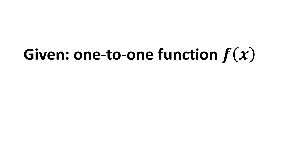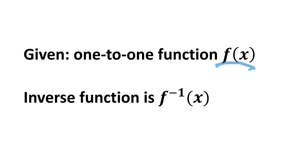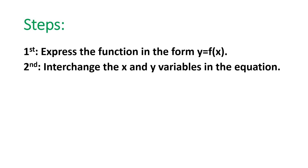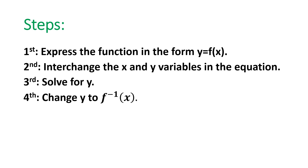In symbols, given a one-to-one function f(x), the inverse f is denoted by this symbol, which is read as the inverse of f(x). To find the inverse of a one-to-one function, consider the following steps. First, express the function in the form y equals f(x). Second, interchange the x and y variables in the equation. Third, solve for y. And fourth, change y to the symbol of the inverse of f(x).